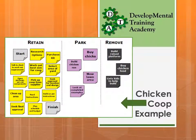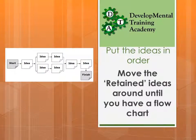Looking at our chicken coop example, we've got a range of ideas in yellow to retain, a number that we're going to park till later such as buy some chicks and mow the lawn, and a number that we've decided to remove such as getting the kids to help build the chicken coop. From there you put the ideas into some sort of order, much like a flowchart — take all the ideas in the retain column and move them around until you have a flowchart.